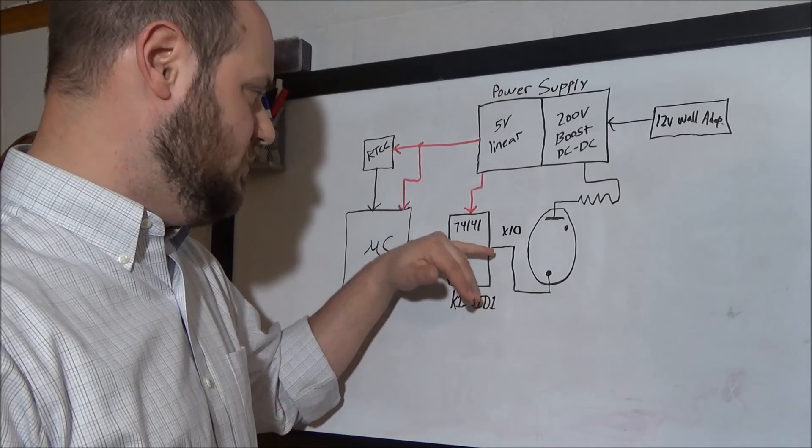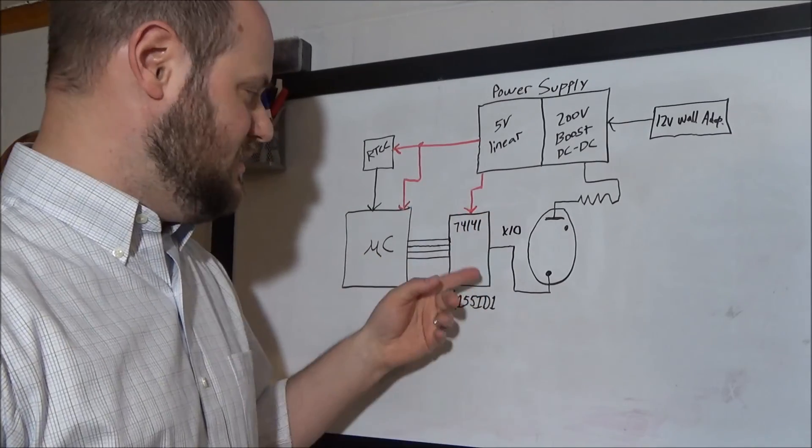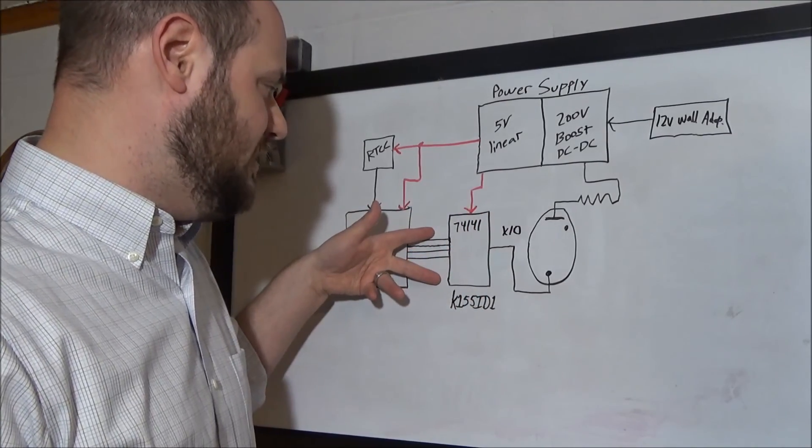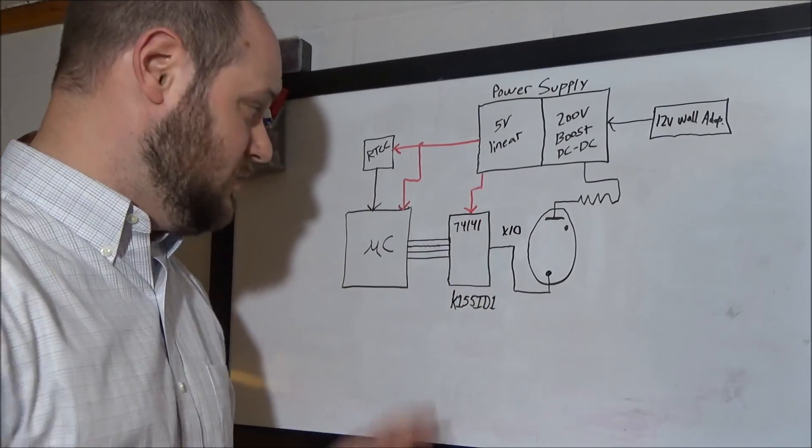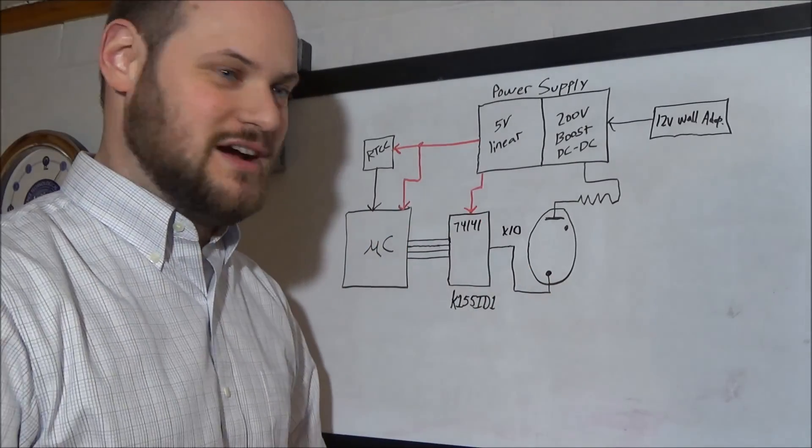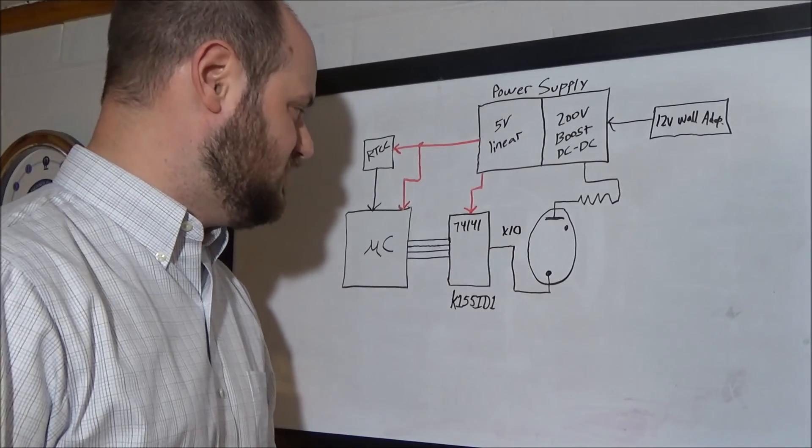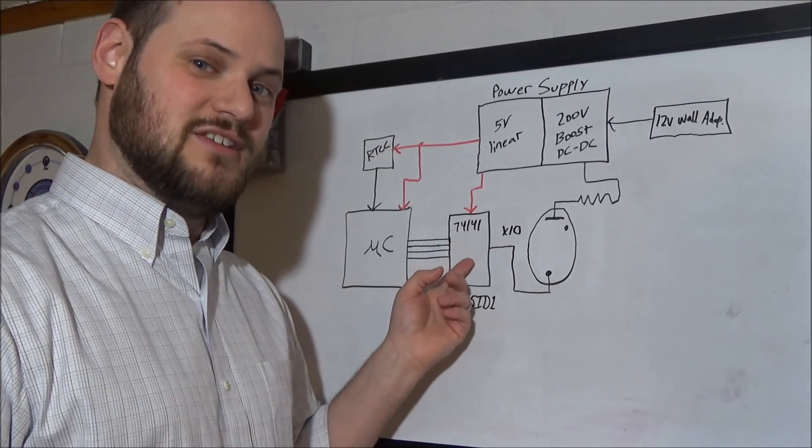So, what does this particular chip do? Well, it's a BCD binary coded decimal to decimal output. So, it takes a binary representation of zero through nine. It only needs the four bits to do that. And then it outputs zero through nine on 10 different pins. It'll decode a binary value into literally a decimal value, which is perfect. That's exactly what we need to drive our Nixie Tubes. So, a BCD to decimal converter.